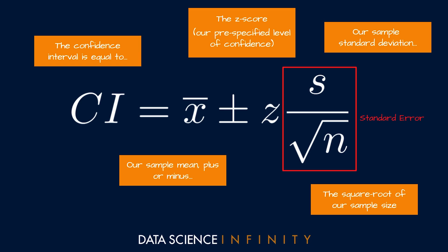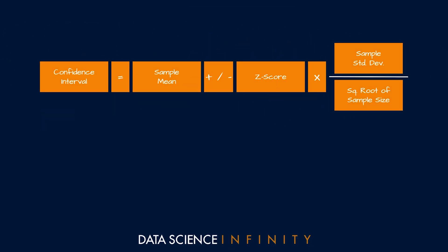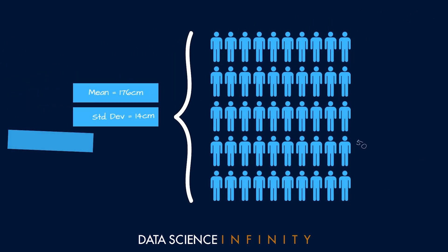So that is what all of this means intuitively. Let's now put it into action on our example of adult male heights in the USA. Remembering back to our sample's statistics we had a mean height for the 50 men of 176 centimeters, a standard deviation of 14 centimeters, and of course we had our sample size value n of 50.